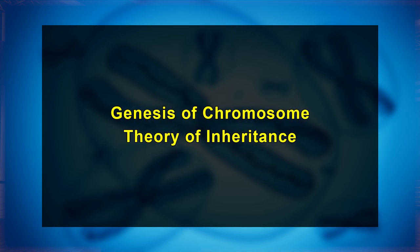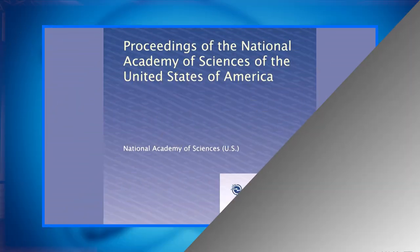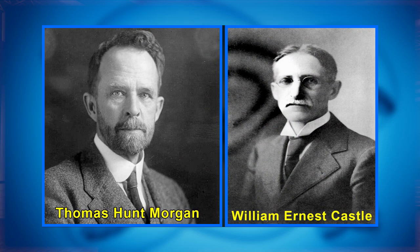Let's discuss the genesis of the chromosome theory of inheritance. Scientists are always searching for the best explanation of a problem, and in search of that, scientists put forth their ideas and principles, which are debated in scientific circles in the form of papers in peer-reviewed journals. In 1919, the Proceedings of the National Academy of Sciences journal presented a heated debate between the laboratories of W.E. Castell and T.H. Morgan.